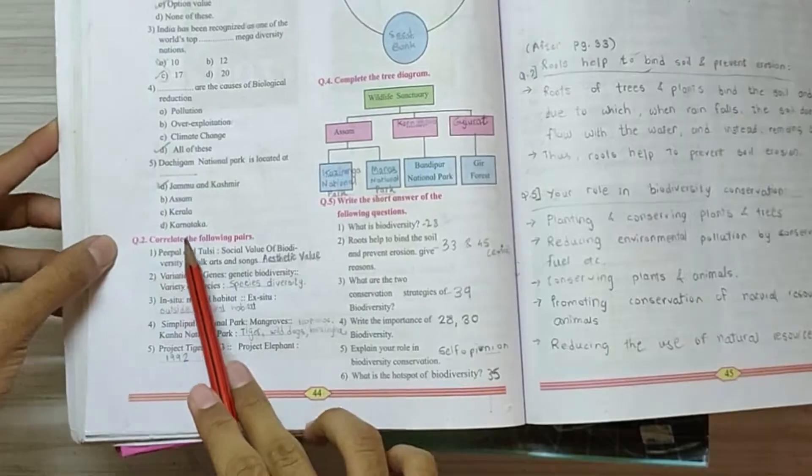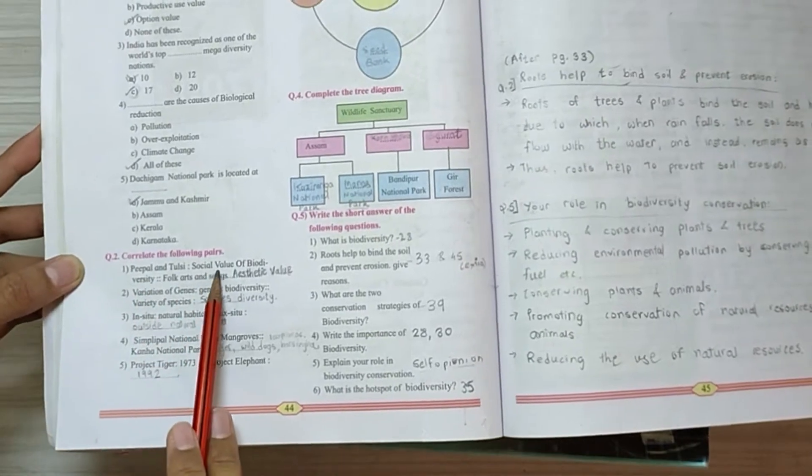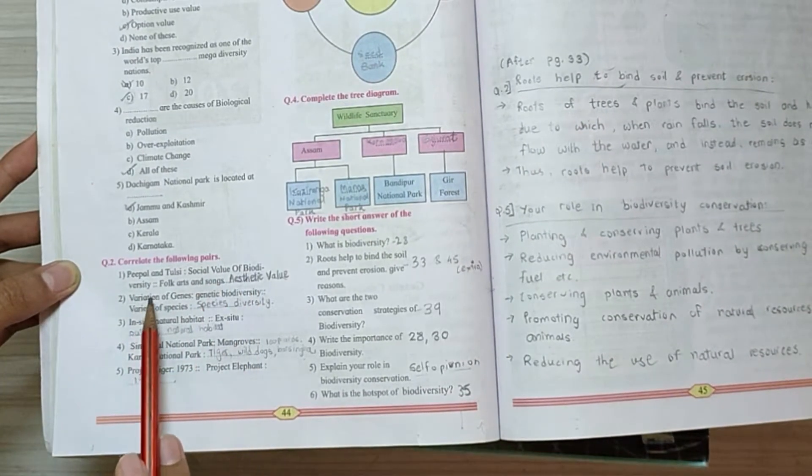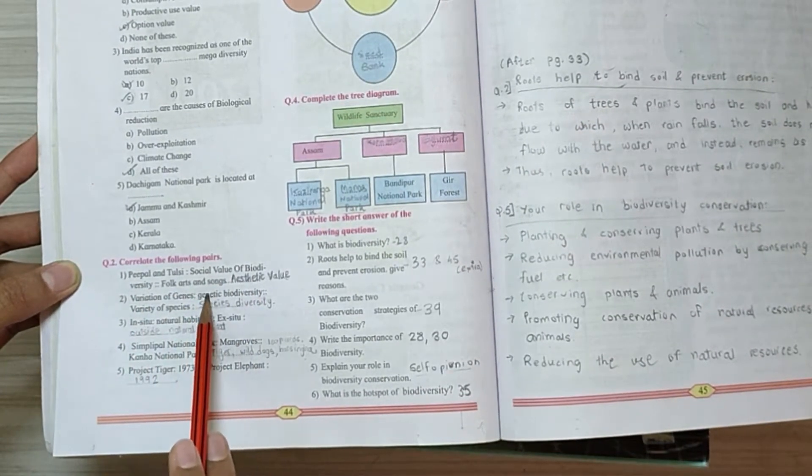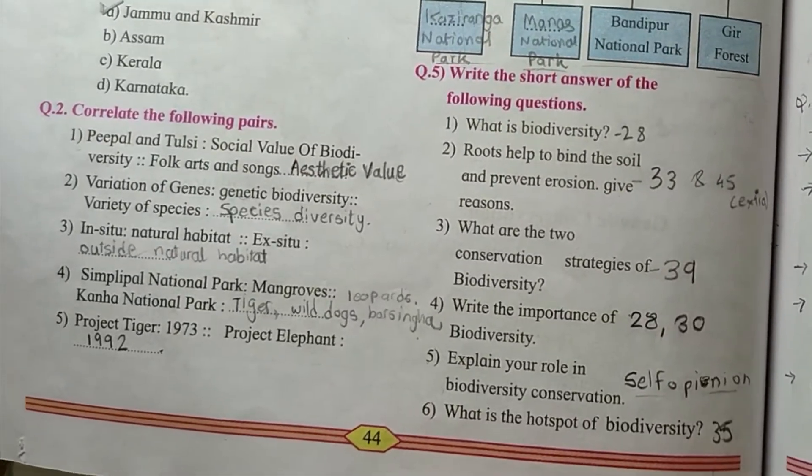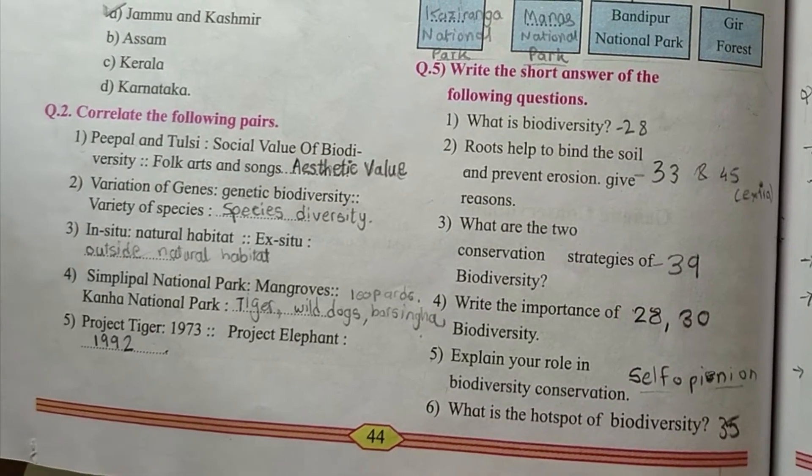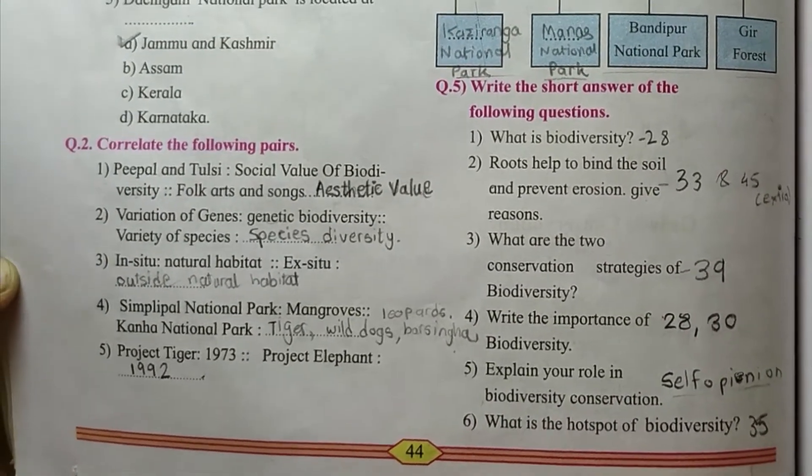Next, correlate the following pairs. First, people and Tulsi, social values of Biodiversity, folk arts and songs is aesthetic values. Second, variation of genes, genetic biodiversity, variety of species, species biodiversity or species diversity.